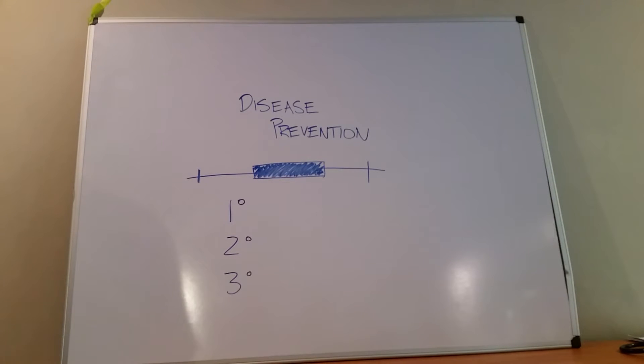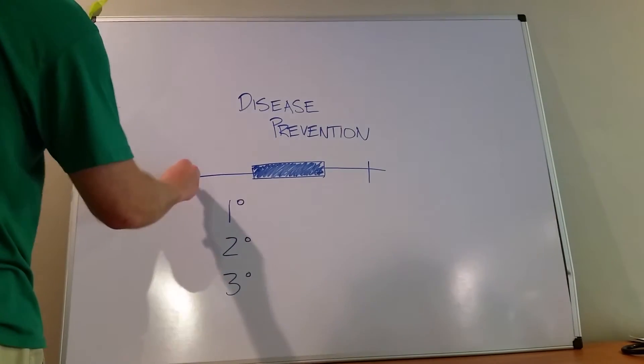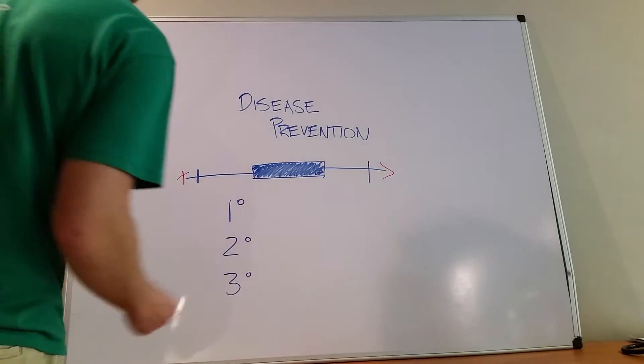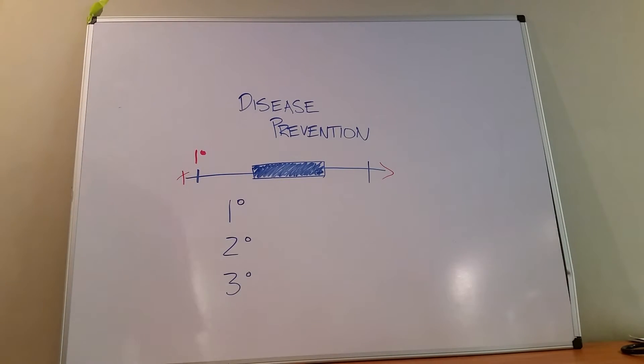So the first one is primary, number one always comes first. Here we have our timeline with the past and this is the future. So with the past, primary is going to occur first. And primary is something that we do way before you ever have the chance of having a disease or being exposed to disease to try and prevent.